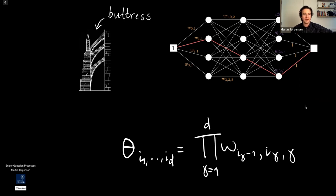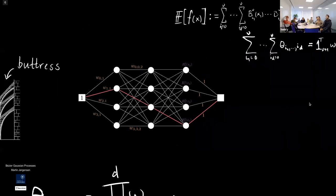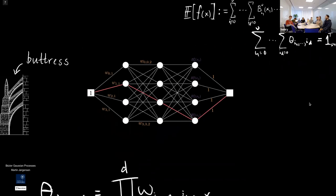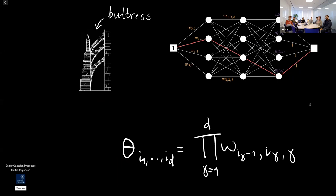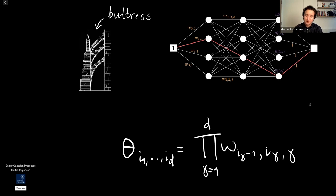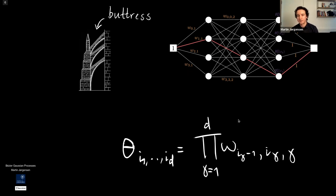Q: Are there more W's than if you parameterized each theta individually? A: There are fewer W's — it depends on the configuration, but notice we are sharing parameters. When it really becomes big, there should be fewer W's than control points because we share a lot of them. For example, this W here is shared between many control points in the first dimension.